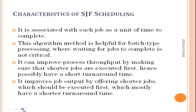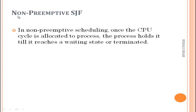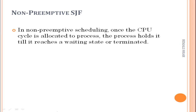For non-preemptive scheduling, once the CPU cycle is allocated to a process, the process holds it until it reaches a waiting state or is terminated. This is about the non-preemptive SJF.